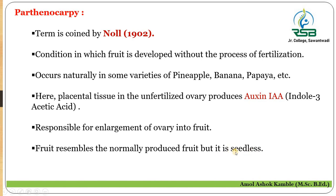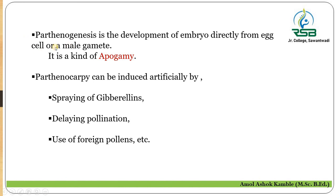Parthenogenesis refers to the development of an embryo directly from the egg cell or male gamete, and it is a kind of apogamy. Parthenocarpy can be induced artificially by spraying gibberellin plant growth hormone, by delaying pollination, or by use of foreign pollen grains.